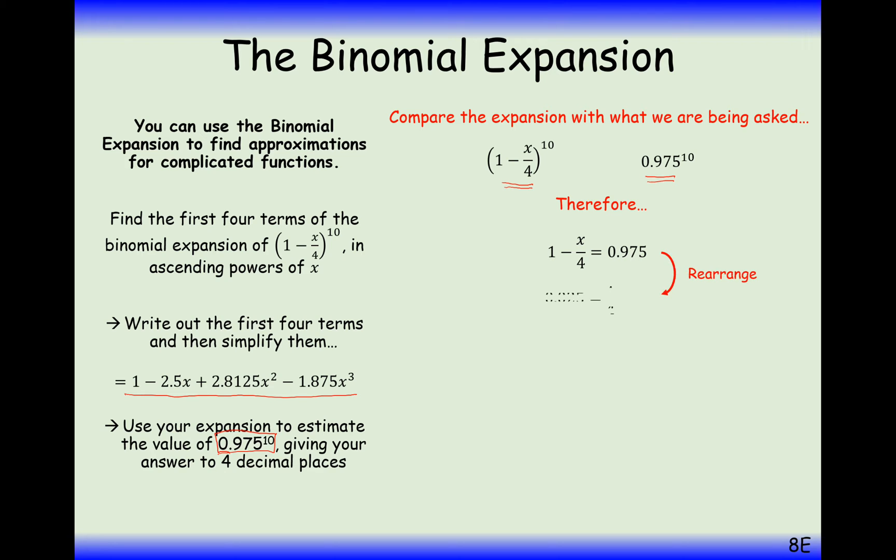Well, let's just rearrange this little equation here. And we get x is 0.1. We can see here if we were to plug in 0.1 as the value here, that would be 1 minus 0.1 over 4. So that would be 0.025. 1 minus 0.025 is 0.975.